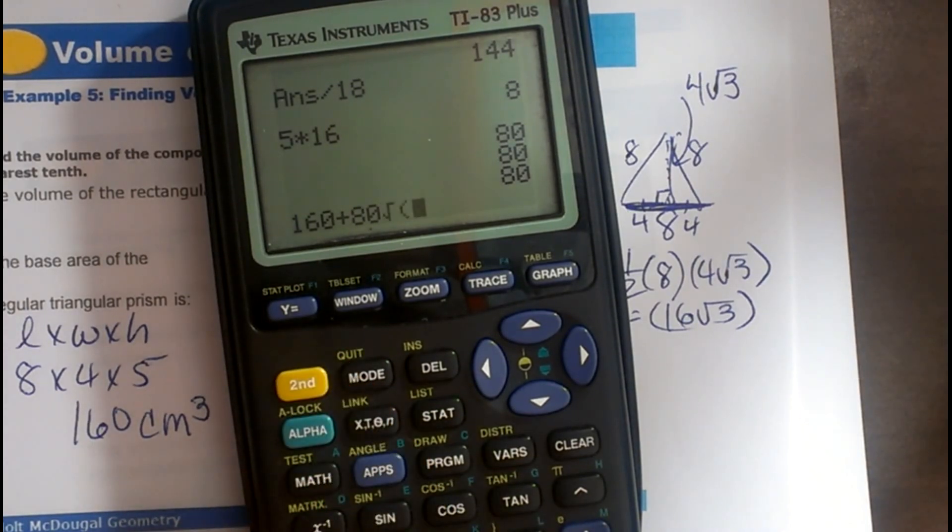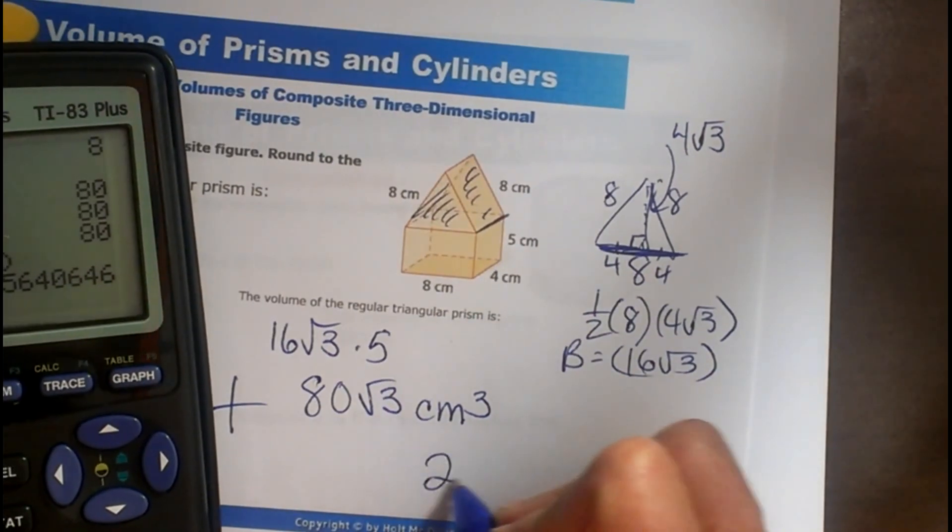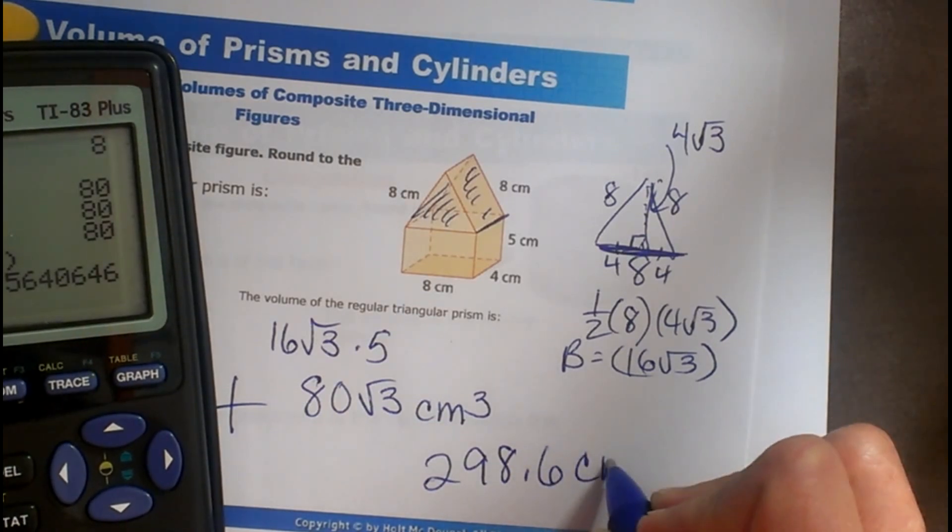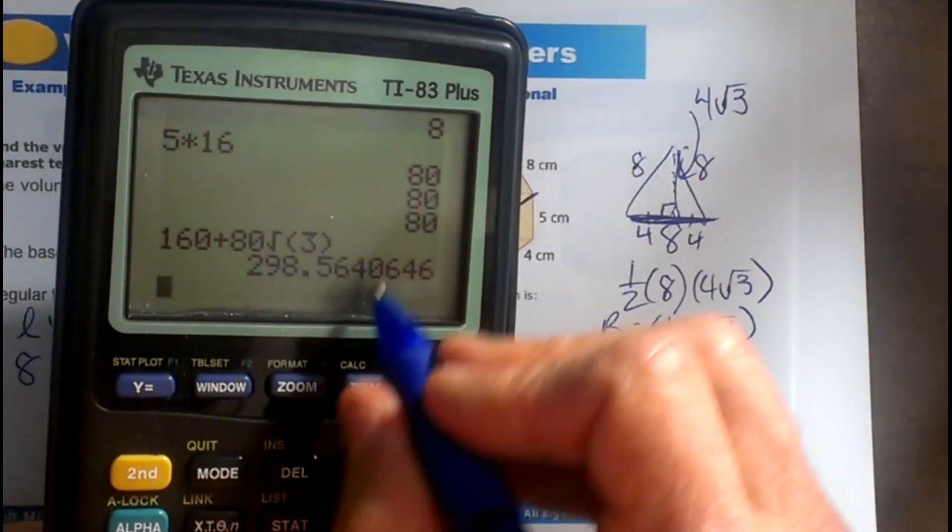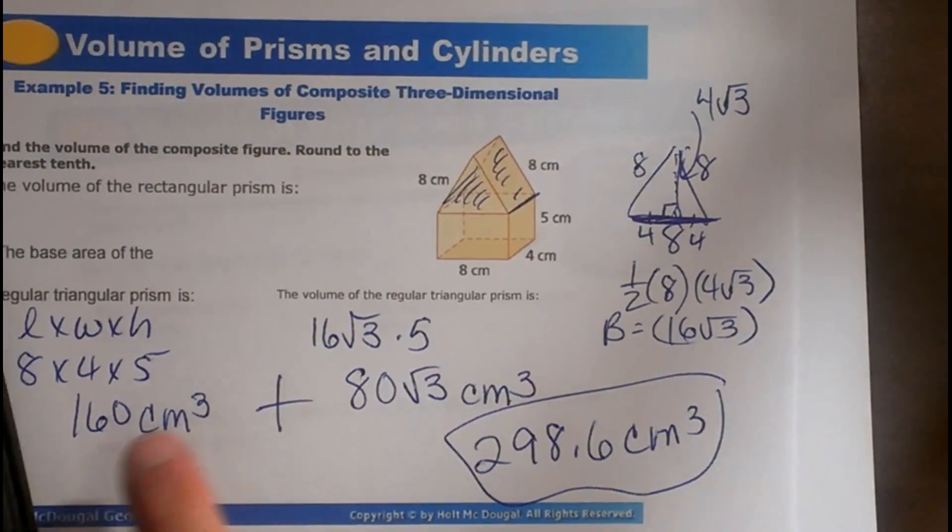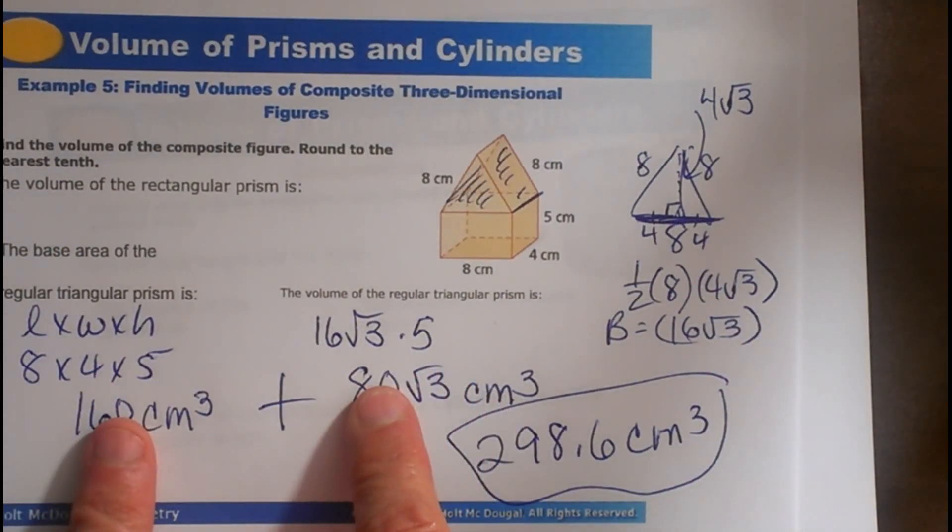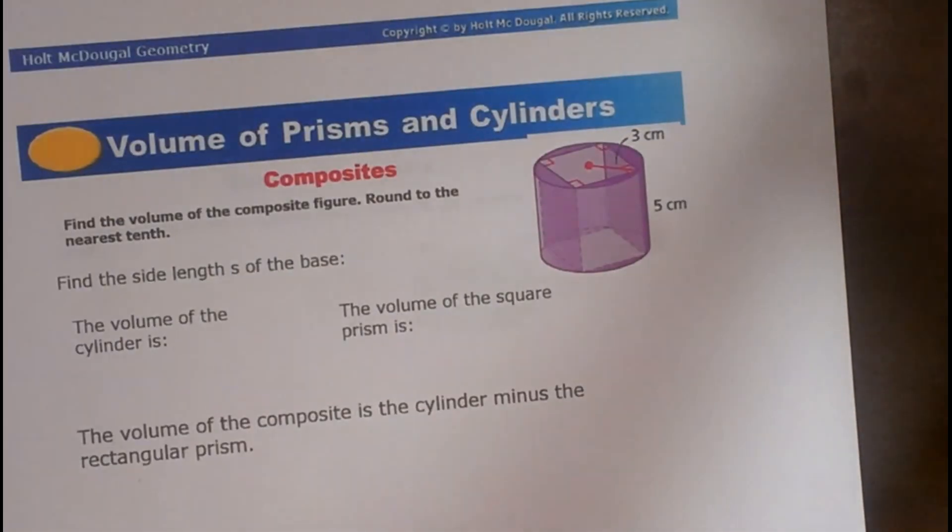and put in the square root 3, and it should give you the decimal answer. So the decimal answer is 298.6 cubic centimeters, but if you want the exact, because we'd have to round this off, so that one's not exact. Here's the exact answer. So if you're asked for exact answers, leave them as radicals, and if you're asked for estimated, you write it as a decimal.